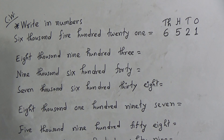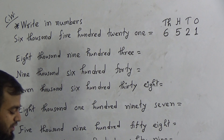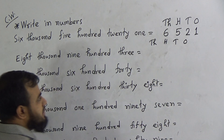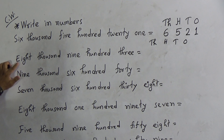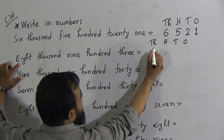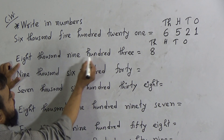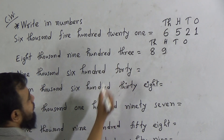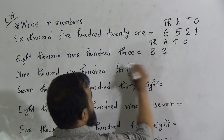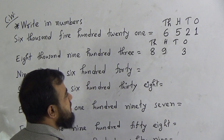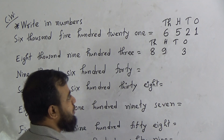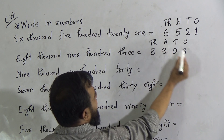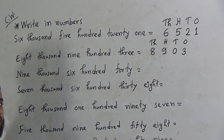The next number is 8903. We set up the place value table: Thousands, Hundreds, Tens, and Ones. Eight thousand means the thousands place is filled with the digit 8. Nine hundred means the hundreds place is filled with 9. Then it's 3, so we write 3 in the ones place. Notice the tens place is empty, so we fill the tens place with the digit 0. So 8903 is written as 8 | 9 | 0 | 3.